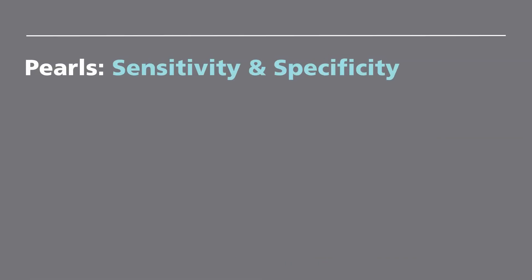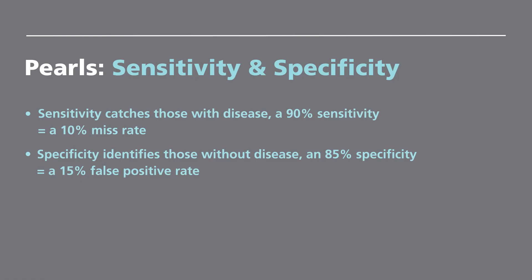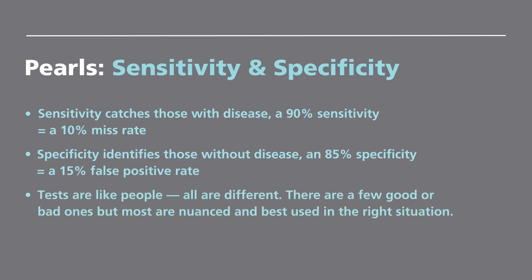The pearls to remember when approaching sensitivity and specificity: Sensitivity is how well a test catches those with disease — a 90% sensitivity equals a 10% miss rate. Specificity is how well a test identifies those without disease — an 85% specificity equals a 15% false positive rate. There are few truly good or bad tests; most need to be thoughtfully used in the right situation.